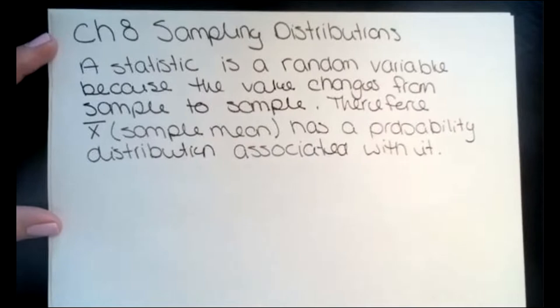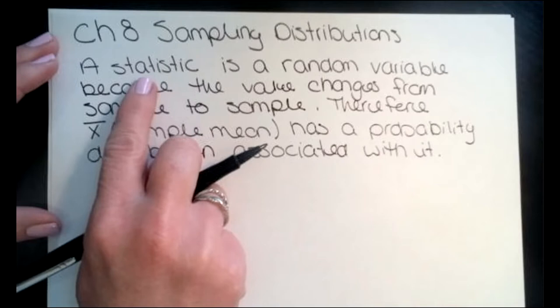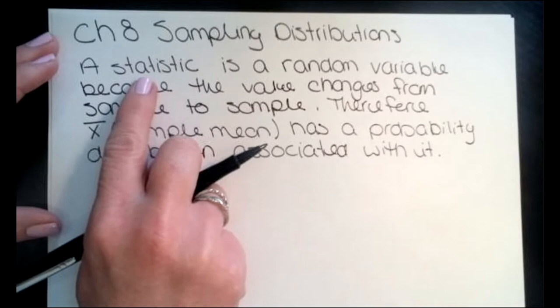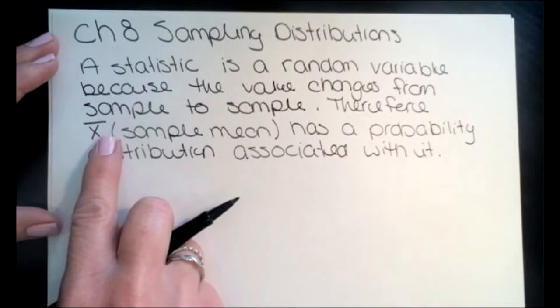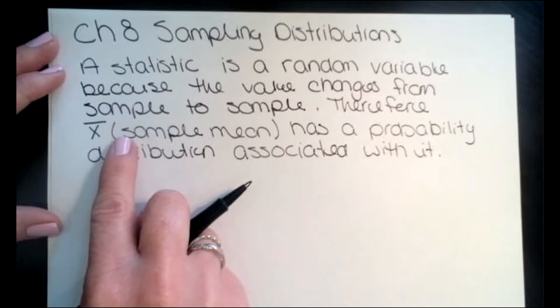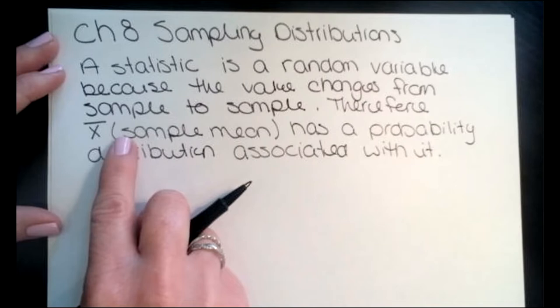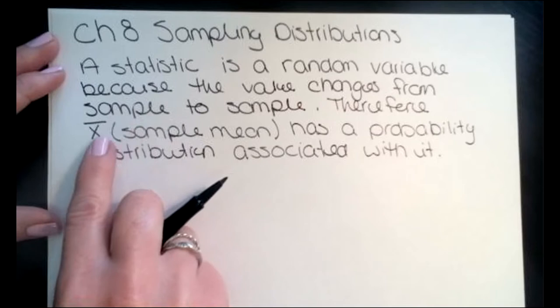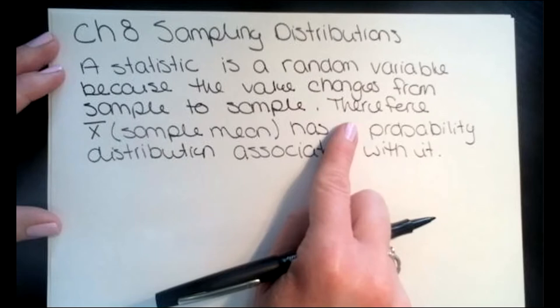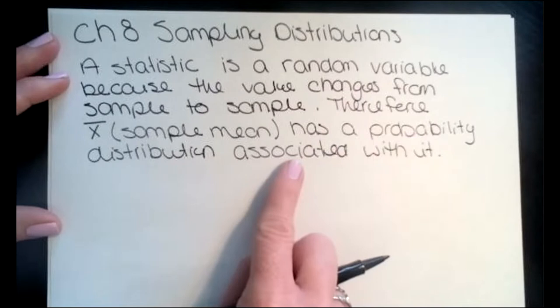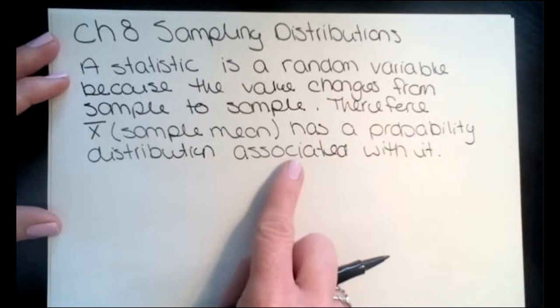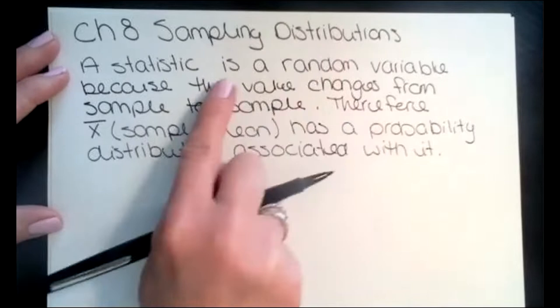We're studying numerical data — specifically the sample mean x-bar. X-bar is a statistic, which is just something from our sample. Since x-bar changes from sample to sample — say we're studying grades from exam one and I take a sample of five students over and over again from our class — my sample mean, the average of all those exam one scores, will change from sample to sample. So x-bar, since it is a random variable, does have a probability distribution associated with it.